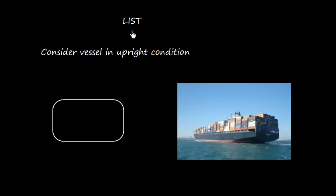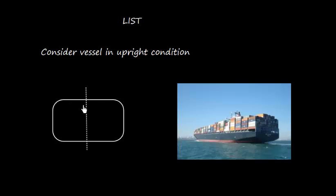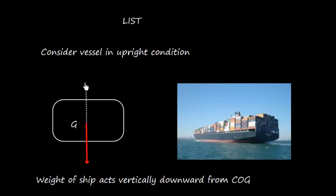In this video I'm going to discuss about list. Let us consider a vessel in an upright condition. If we look at the vessel from the stern, this side is going to be my starboard side and this side will be my port side. Let us consider the scenario in the transverse direction. This is my centerline CL. We know the weight of the ship acts vertically downward from the COG, the center of gravity. We assume that the COG is here, on the centerline.